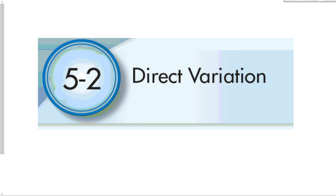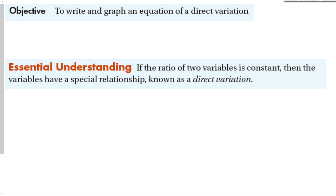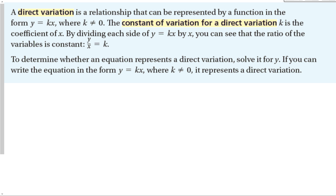5-2, Direct Variation. Our objective for this section is to write and graph an equation of a direct variation. Our central understanding is that if the ratio of two variables is constant, then the variables have a special relationship known as direct variation. Direct variation is a relationship that can be represented by a function in the form y is equal to k times x, where k is not equal to 0.